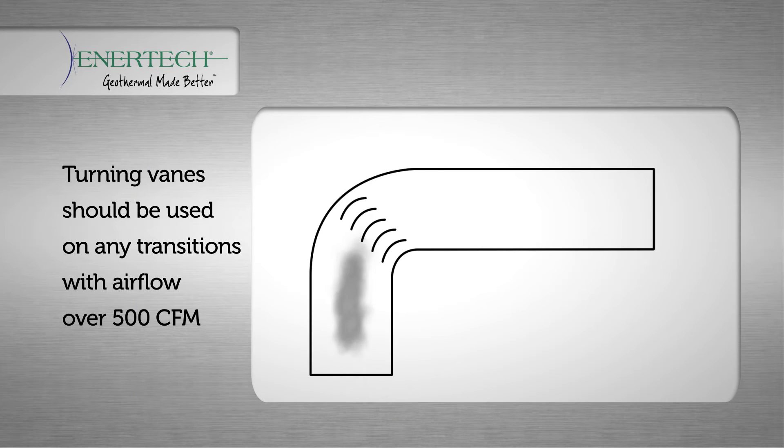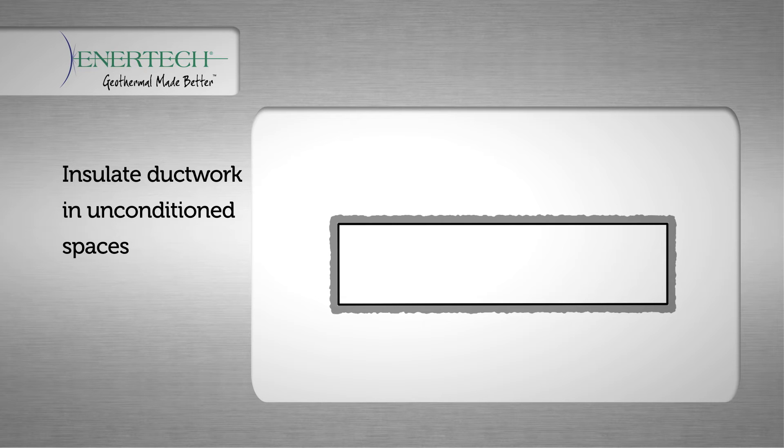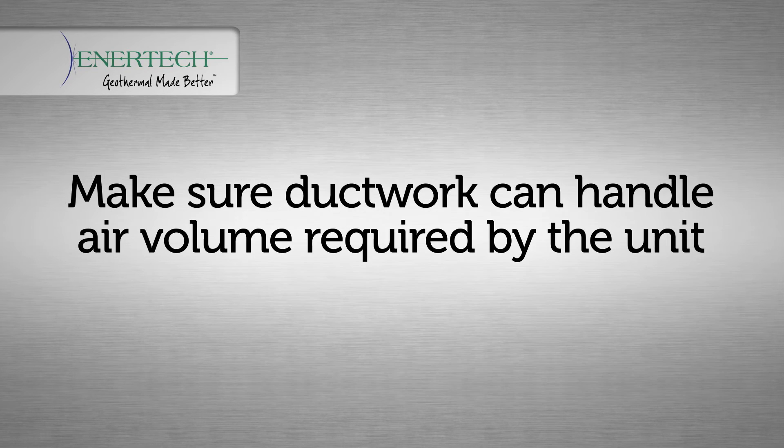Turning vanes should be used on any transition with airflow over 500 CFM. If the unit is installed in an unconditioned space, the metal ductwork should be insulated to prevent heat loss gain and to absorb air noise. If the unit is being installed with existing ductwork, the ductwork should be designed to handle the air volume required by the unit being installed.